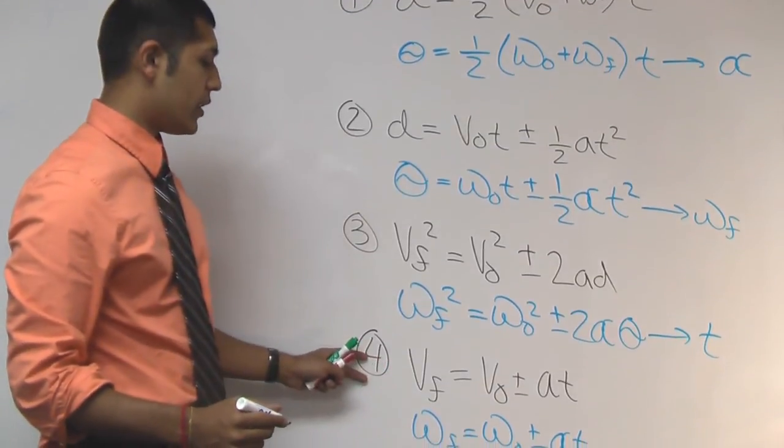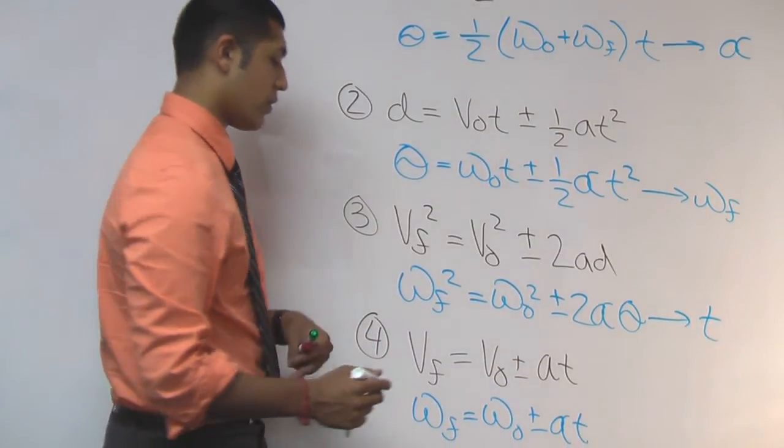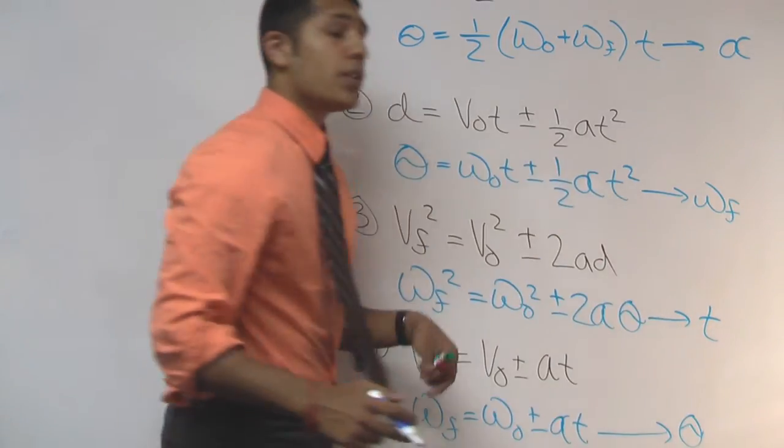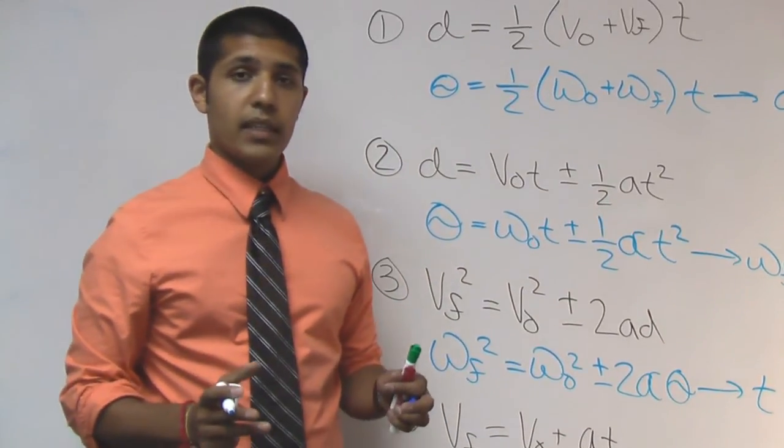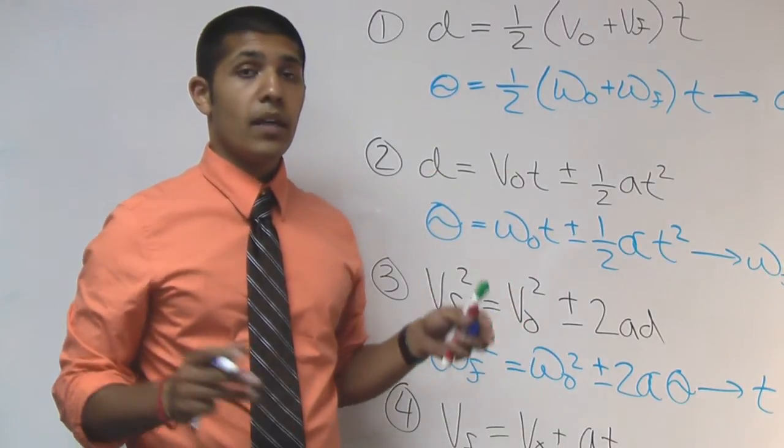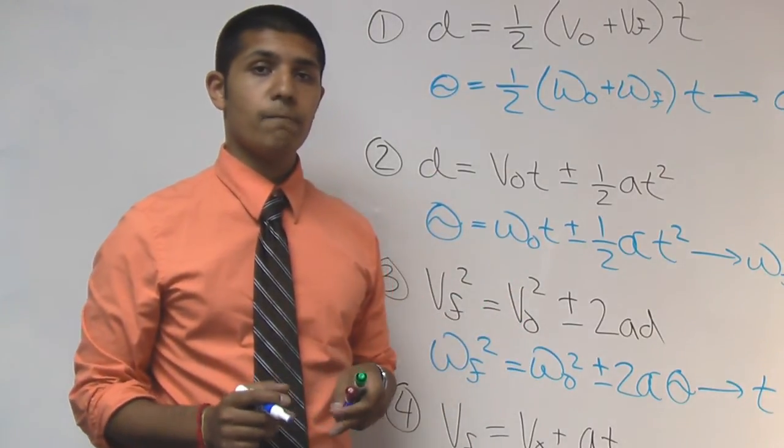And for the very last equation, the missing variable is going to be theta. So review your missing variable technique and you can apply it to rotational kinematics in the same way. Basically killing two birds with one stone. Alright, good luck.